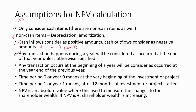Any transaction that happens during a year will be considered as occurring at the end of that year, unless otherwise specified. For example, a transaction happening during year 1 is treated as occurring at the end of year 1. Any transaction occurring at the beginning of a year will be considered as occurring at the year end of the previous year — so a transaction at the beginning of year 2 is treated as occurring at the end of year 1.